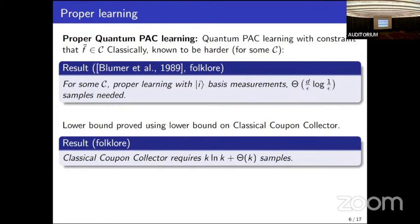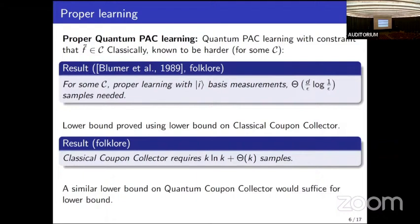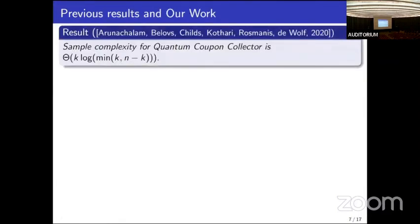The classical coupon collector problem has a lower bound of k log k. If we could find the same lower bound for the quantum coupon collector problem, we would also get the same proper learning lower bound in the quantum case. However, in 2020 it was shown that if the size of the complement is small, there is a much faster algorithm for quantum coupon collector with arbitrary quantum measurements.